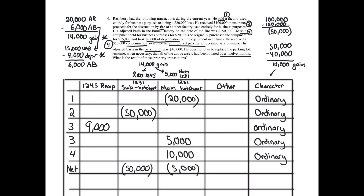All transactions in this problem are ordinary. This just shows you that ultimately everything might end up ordinary. The last step is to consider unrecaptured Section 1250, which applies only to real property that's been depreciated, and only to gains — specifically long-term capital gains or net Section 1231 gains. I look at the last column: if anything is long-term capital gain, you've got to ask if unrecaptured Section 1250 is applicable. The answer is no — everything is ordinary. Unrecaptured Section 1250 only applies to long-term capital gains, giving a 25% rate rather than 20%. But everything here is ordinary at 37% for the highest rate. So we're done with this problem.